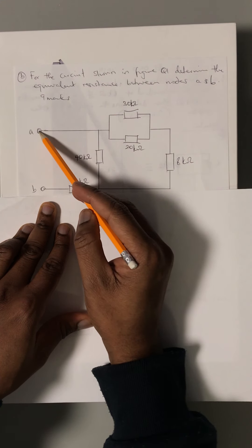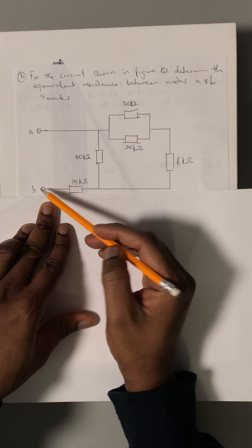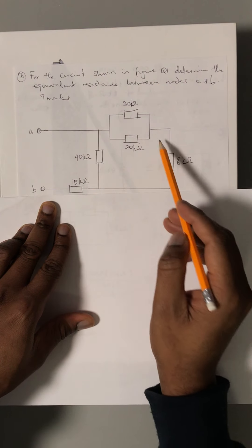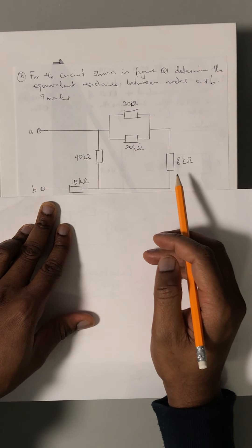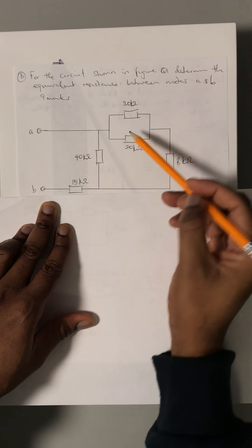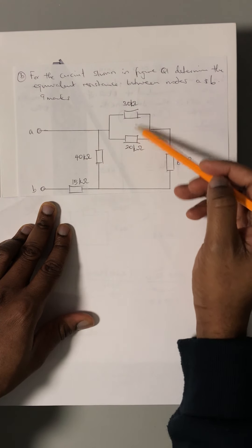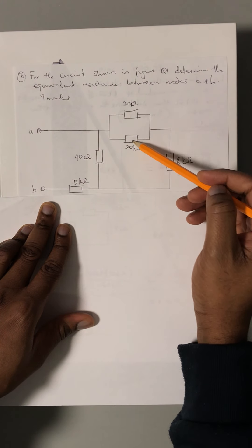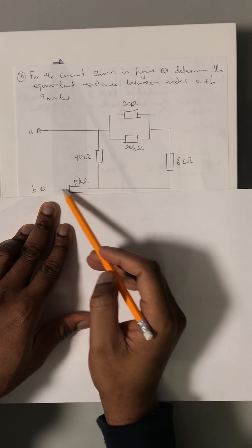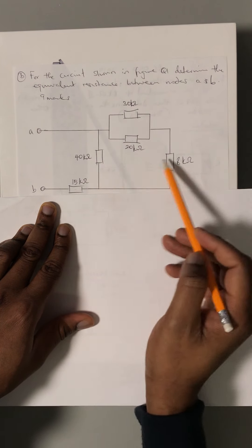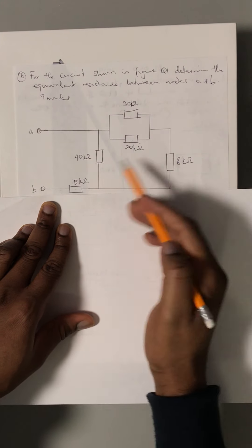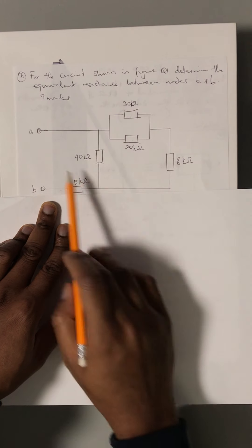Here we have two nodes, node A and node B. We have a multi-complex resistor circuitry here with two parallel resistors connected to series resistors. This is a very complex circuit.